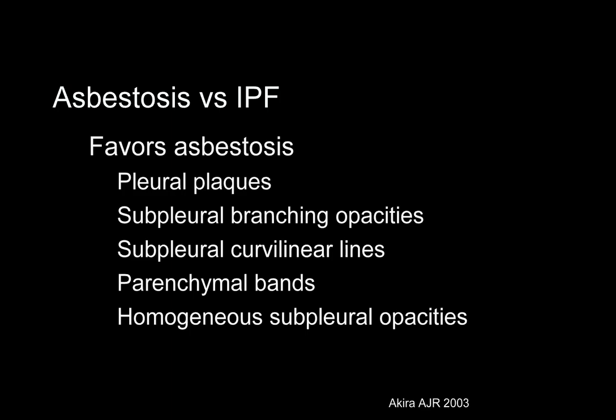For legal reasons, the differentiation between idiopathic pulmonary fibrosis and asbestosis is of some importance. Pleural plaques are seen in the majority of those with asbestosis. Of course, those with pre-existing asbestos exposure are not immune from developing idiopathic pulmonary fibrosis or the collagen vascular diseases. In addition, 20% of patients with asbestosis lack pleural plaques.